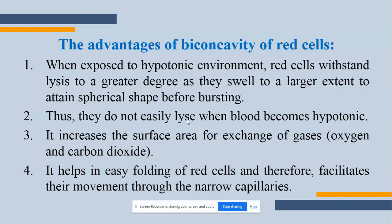When exposed to a hypotonic environment, red cells withstand lysis — lysis means breakdown or destruction — to a greater degree, as they swell to a larger extent to attain spherical shape before bursting. That means if the body has a hypotonic environment, the RBC swells to maintain its shape and function. The biconcave shape prevents it from bursting quickly. It also increases the surface area for exchange of gases like carbon dioxide and oxygen.